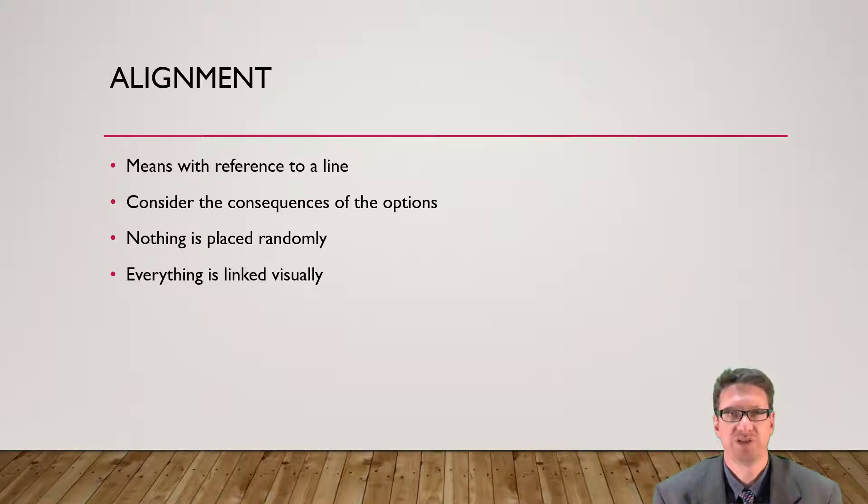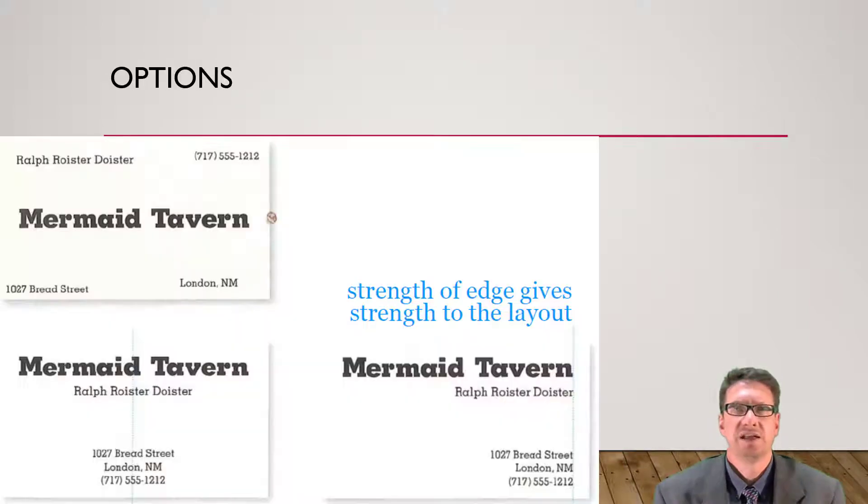You want things to look as good as possible because you don't want badly placed information to get in the way of your message. Let's look at some options. Here's a few examples of some business cards. Which one do you like the best? Separated out to the edge, central alignment, or all tied together to a single line? The idea is that the strength of the edge down the bottom gives strength to the layout.